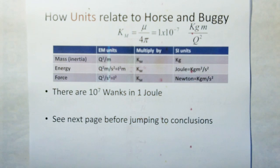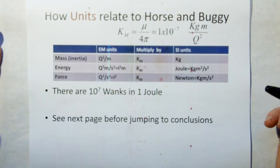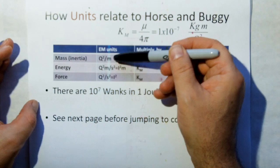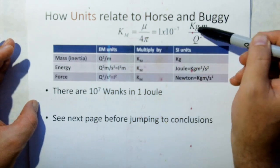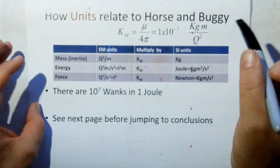How the new units relate to the horse and buggy definition: if you take all the new units and multiply them by km, which is 1 times 10 to the minus 7, you end up back at the SI units.